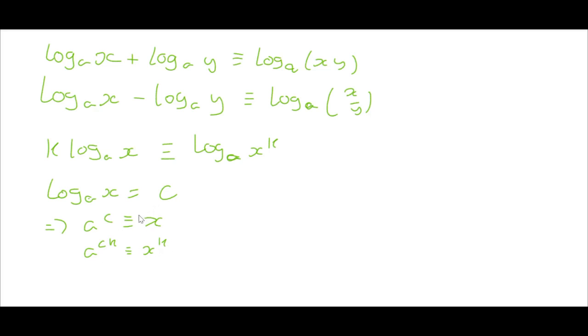And then taking logs on both sides here gives log base a, and we're going to switch the sides over, so x to the k, so that's taken over to the right hand side. So, that's identical to log base a of a to the ck is the power we have to raise a to to get x to the k.